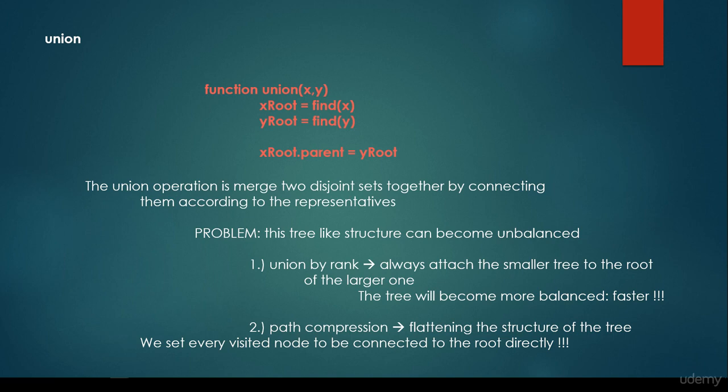The second option is path compression. We usually use both of these solutions at the same time: union by rank plus path compression. Basically, path compression flattens the structure of the tree — we set every visited node to be connected to the root node directly. This allows us to end up, asymptotically, with an O(1) constant time complexity algorithm as far as the find operation is concerned.